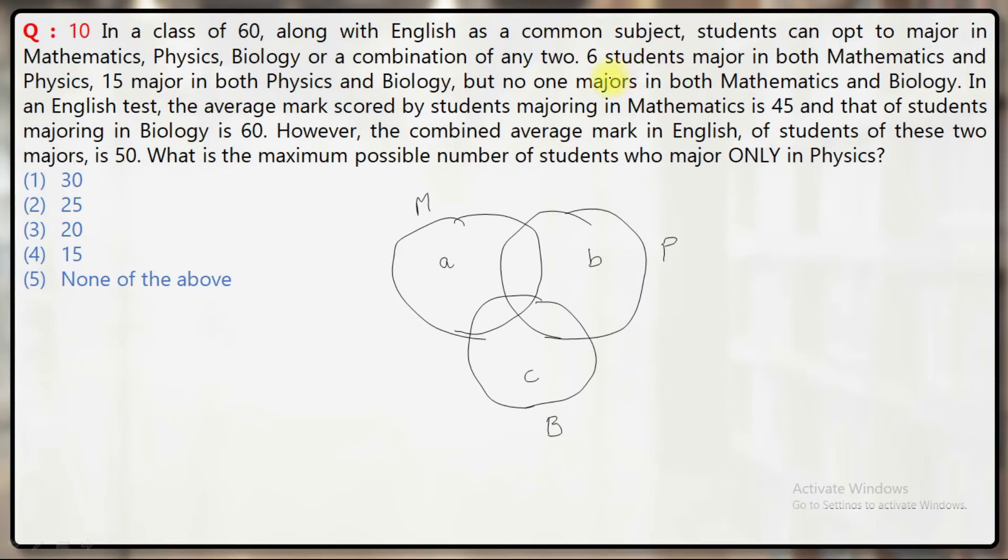It's given that six students major in both Mathematics and Physics. No one majors in both Mathematics and Biology, so this intersection must be zero. So six students major in both Math and Physics (this part becomes 6), and 15 major in both Physics and Biology (this part becomes 15).